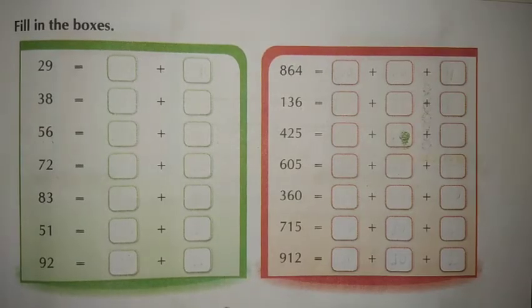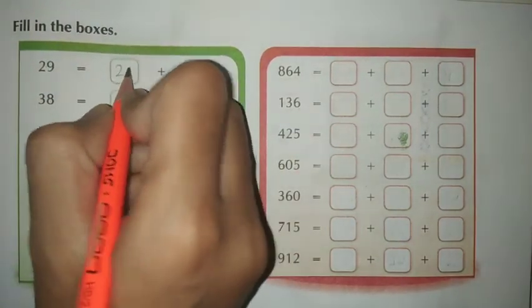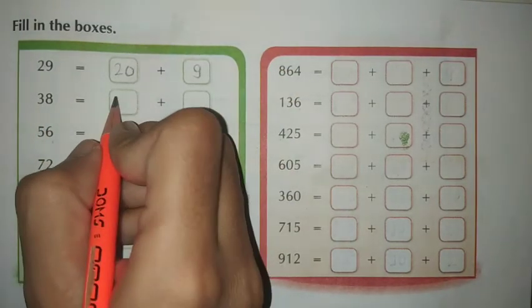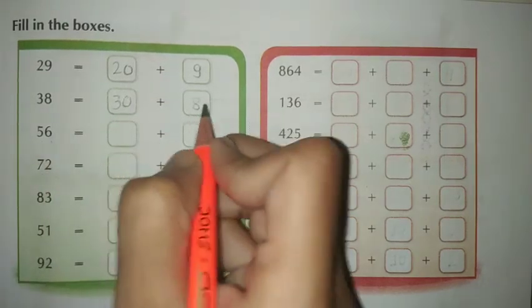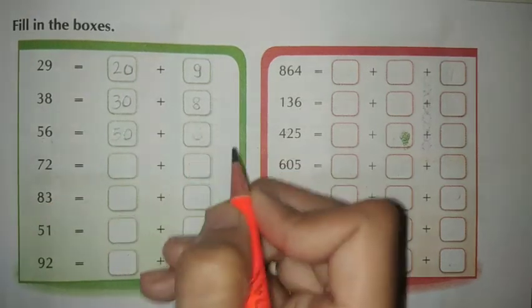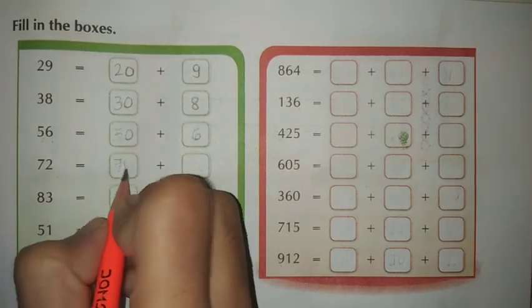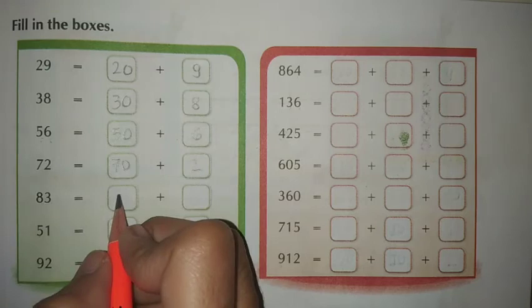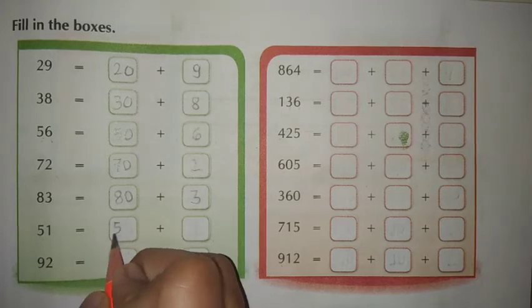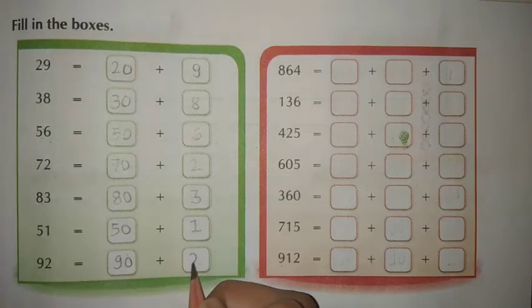Next, fill in the box. 29 equals 20 plus 9. 38 equals 30 plus 8. 56 equals 50 plus 6. 72 equals 70 plus 2. 83 equals 80 plus 3. 51 equals 50 plus 1. 92 equals 90 plus 2.